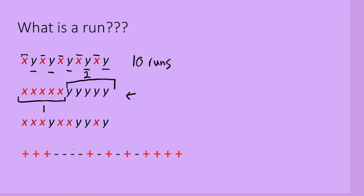What about in this example? We have 1, 2, 3, 4, 5, and 6. So there are 6 RUNS.